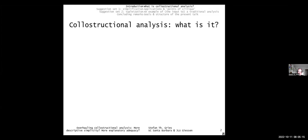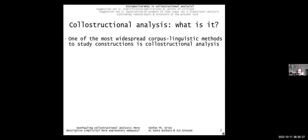Collostructural analysis: what is it? From the uptake this method has enjoyed in the last 20 years — the first publication came out in 2003 — this was one of our better ideas. It is one of the most widespread corpus linguistic methods to study constructions, and I want to particularly emphasize 'constructions' here because this will be important in two ways a little bit later. It's a family of three methods.